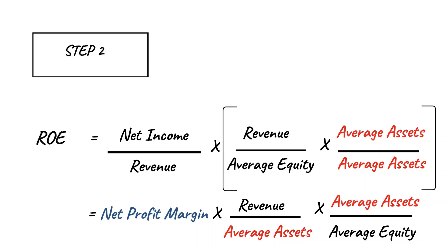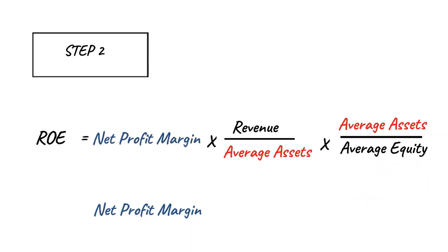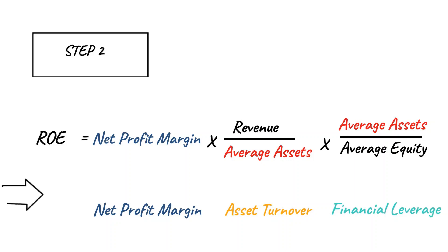Revenue divided by average assets is the asset turnover ratio, while average assets divided by average equity is the financial leverage ratio. This is how we arrive at the traditional three-way DuPont model: ROE equals net profit margin times the asset turnover ratio times the financial leverage of the firm.